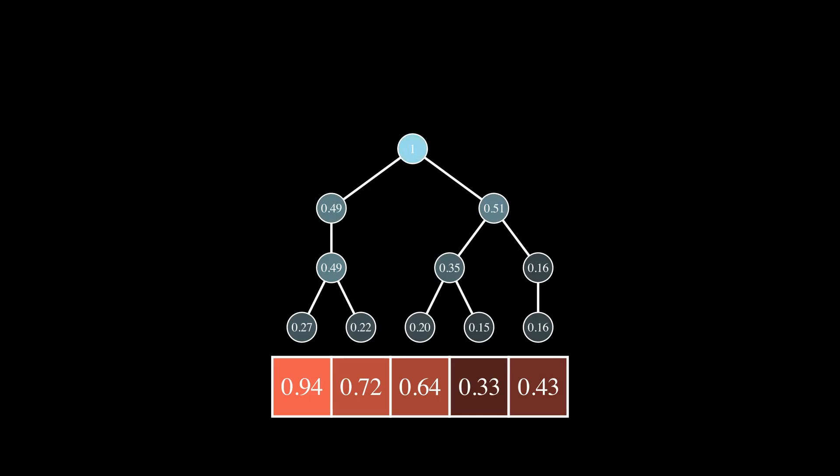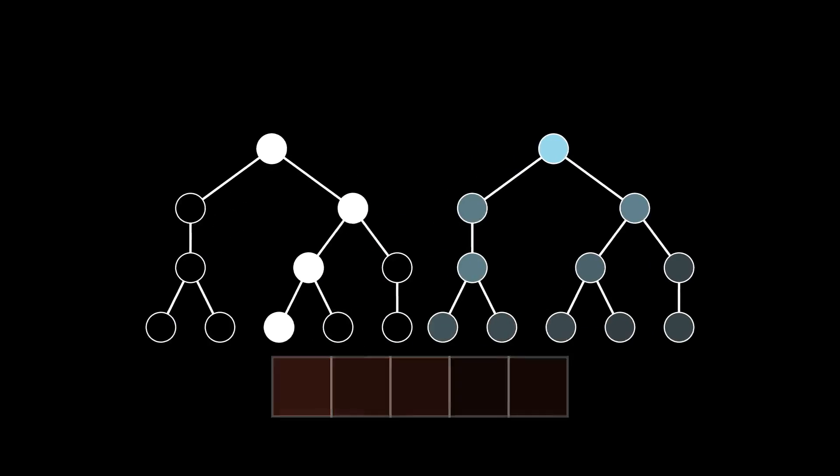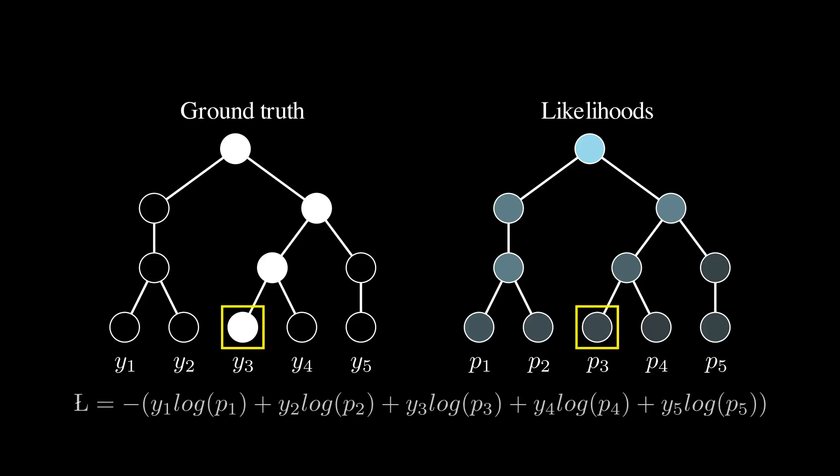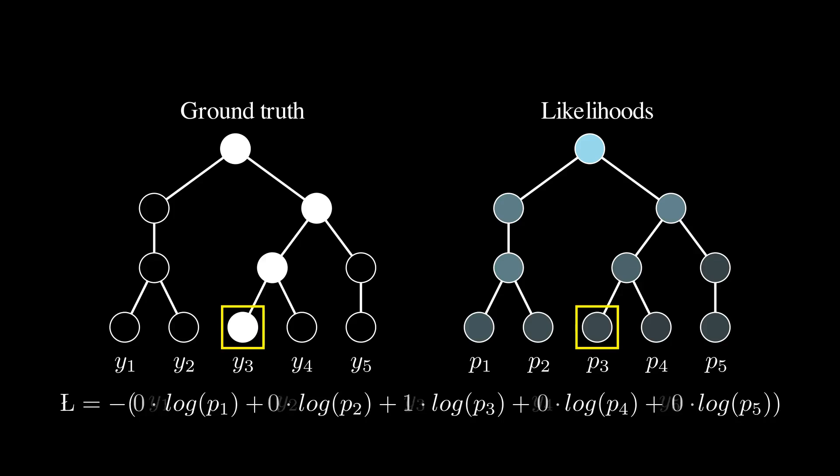Now let's see the specific form the flat softmax loss function will take, depending on the label we received. If the label is at the lowest level, the loss function has the exact same cross-entropy as in any classification task.